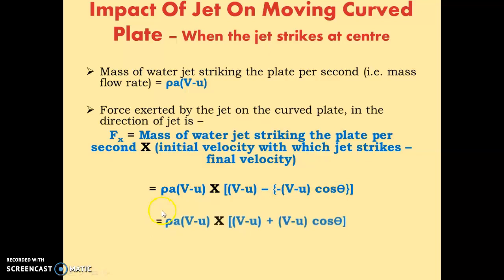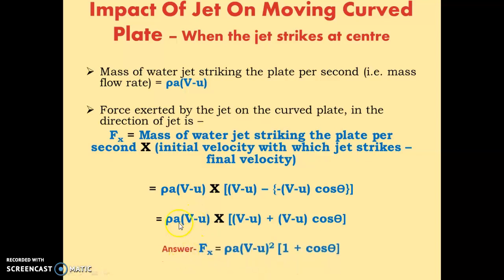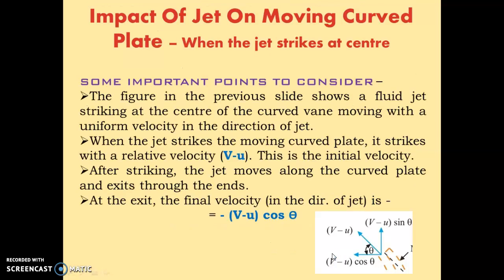So: rho a (v minus u) — the minus times minus becomes plus — we can take (v minus u) as common and factor it out. The final answer for the force exerted by the jet on the curved plate in the direction of the jet is: Fx = rho × a × (v minus u)² × (1 + cos theta), where rho is the density of water, a is the jet area, v is the jet velocity, u is the plate velocity, and theta is the angle made by the deflected jet at the outlet tip with the horizontal.